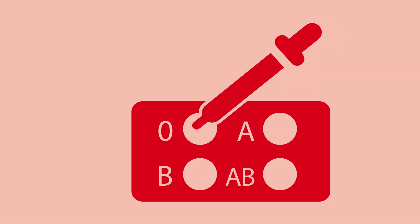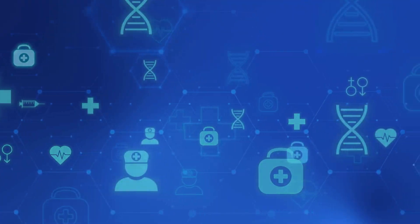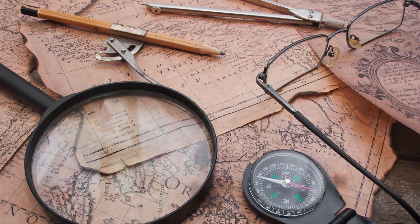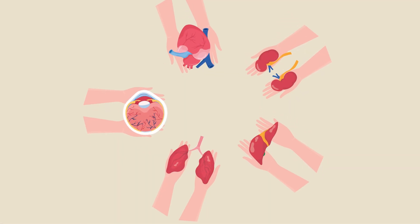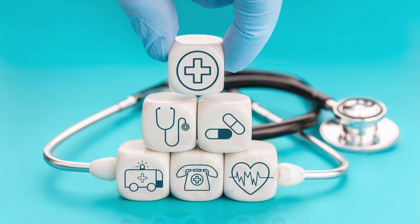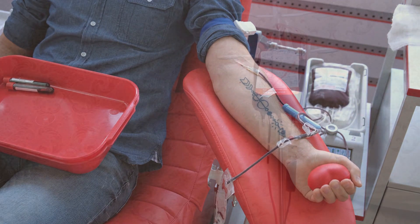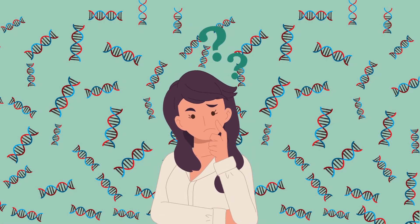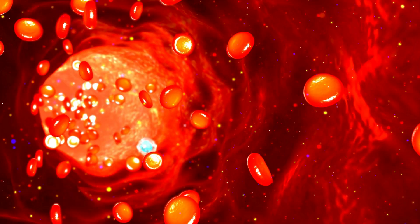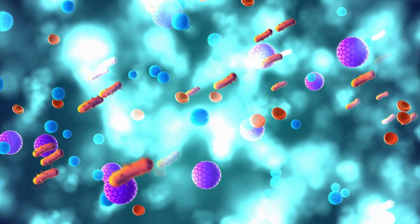Blood types may seem like a simple classification, but they have profound implications in medicine, genetics, and even history. Knowing your blood type is essential for medical emergencies, transfusions, and organ donations, but it can also offer intriguing insights into your health and ancestry. Whether you are donating blood, receiving a transfusion, or simply curious about your genetic background, blood types are an incredible reminder of the complexity of human biology.